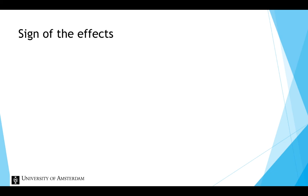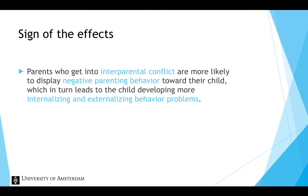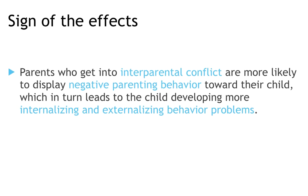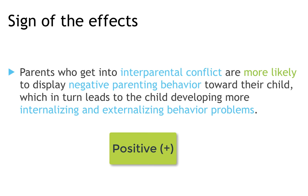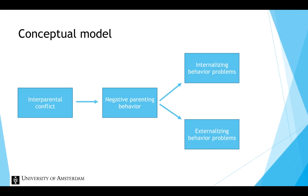We could again add signs to the effects in the conceptual model. Parents who get into inter-parental conflict are more likely to display negative parenting behavior. In other words, high levels of inter-parental conflict lead to high levels of negative parenting behavior. This is a positive relationship. In addition, negative parenting behavior leads to the child developing more internalizing and externalizing behavior problems. This is also a positive relationship. All the effects in the model are positive, so we can add plus signs to each arrow. We end up with a conceptual model which provides an overview of all relationships proposed by the spillover model.